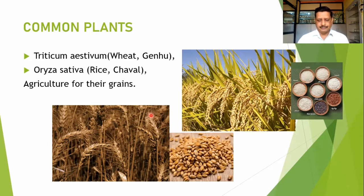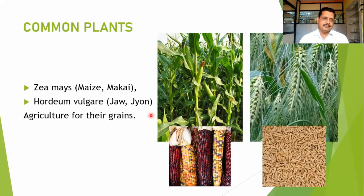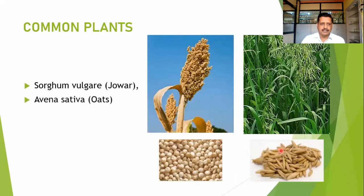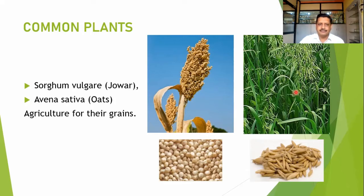Another member is Zea mays — maize — where various types of grain coloration can be observed, though the yellow color type is normally preferred. Hordeum vulgare, commonly called jau or joun, has typically pendulous awns and is cultivated for its grains. Sorghum vulgare, commonly known as jowar, and Avena sativa, commonly known as oat, are also found in this region.